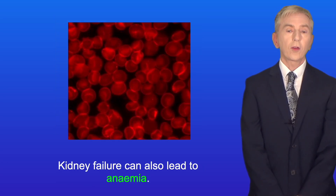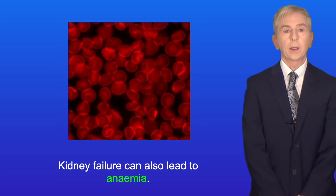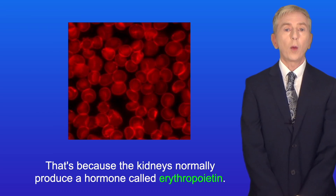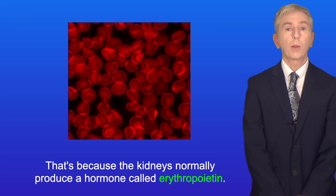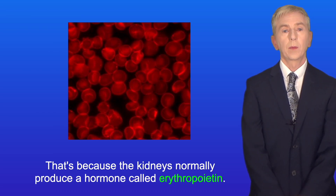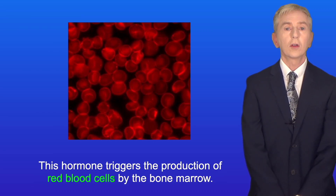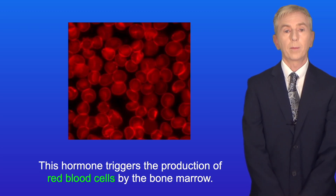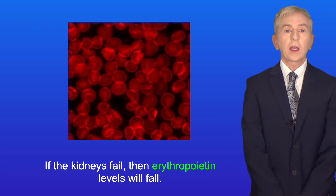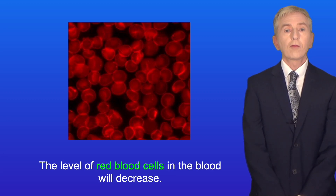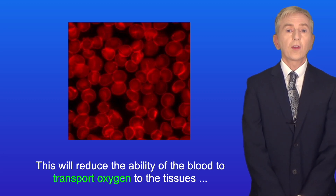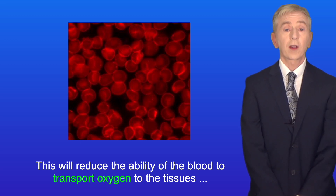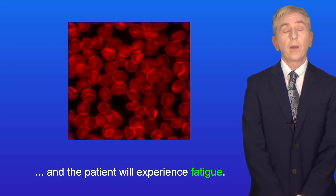Now, kidney failure can also lead to anemia. That's because the kidneys normally produce a hormone called erythropoietin. This hormone triggers the production of red blood cells by the bone marrow. If the kidneys fail, then erythropoietin levels will fall and the level of red blood cells in the blood will decrease. This will reduce the ability of the blood to transport oxygen to the tissues and the patient will experience fatigue.